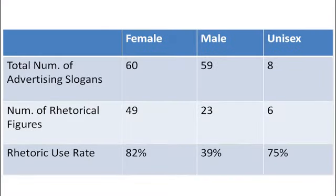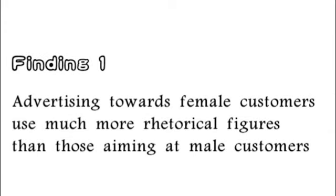In terms of gender difference, there are 60 female ad slogans, 59 male ad slogans, and 8 unisex product ad slogans. 49 female ad slogans use rhetorical figures, accounting for 82%, while 23 male ad slogans use rhetoric, a rate of 39%. Obviously, the female ad slogan rhetoric use rate is more than twice that of male ads. This leads to our first conclusion: advertising targeting female customers uses more rhetorical figures than those targeting male customers. It manifests key differences in the way women and men perceive images and text in advertising.